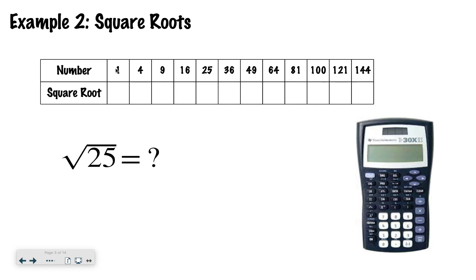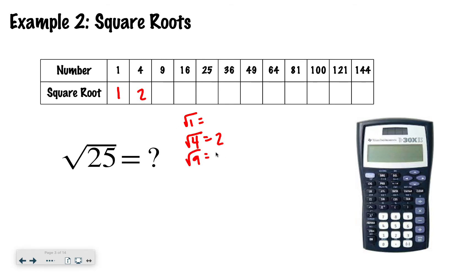So that means if you take that table from the last slide, this is the exact opposite. The square root would be the numbers that were in the last table before I started filling things in. So the square root of 1 — what number times itself gives me 1? It's just 1. The square root of 4 — what number times itself gives me 4? That would be 2. The square root of 9 is 3. The square root of 16 is 4. The square root of 25 is 5.